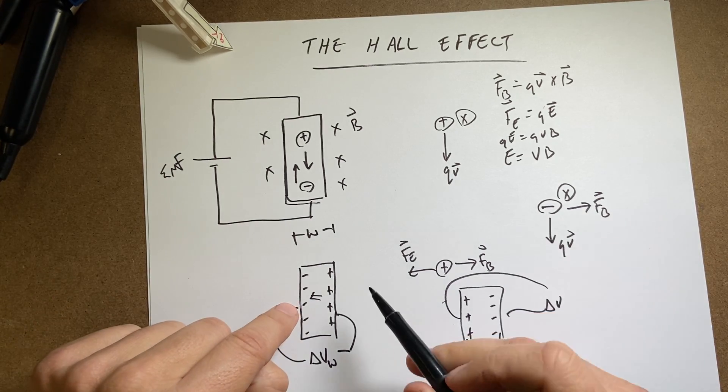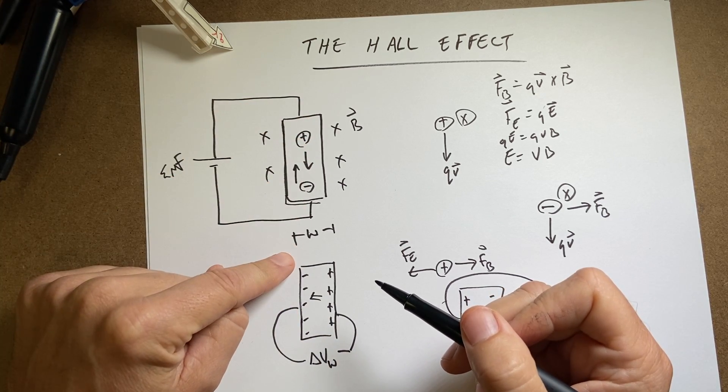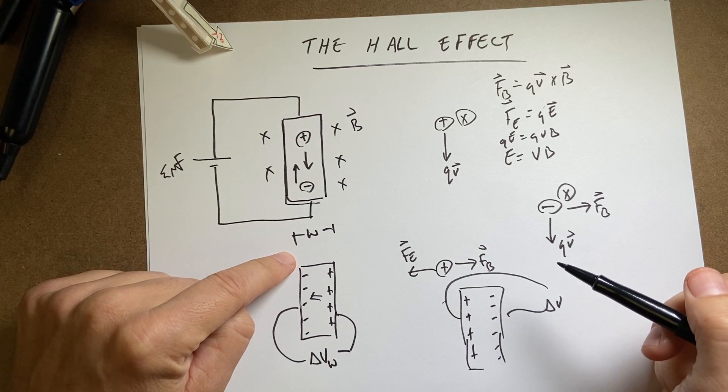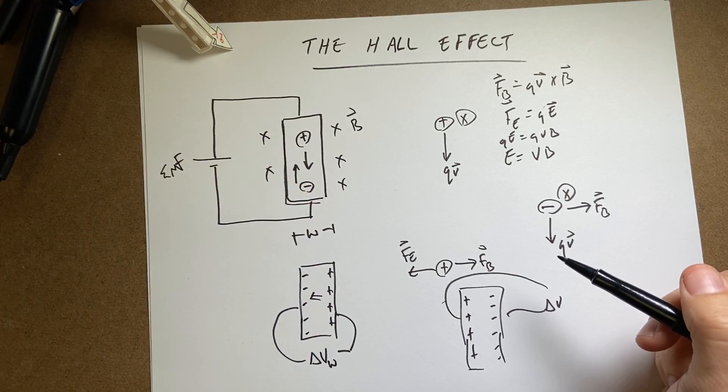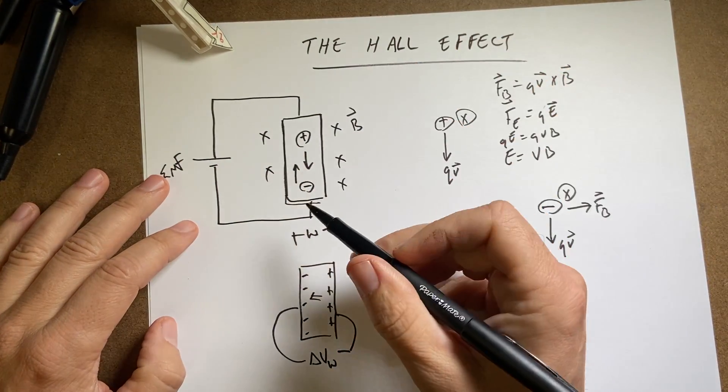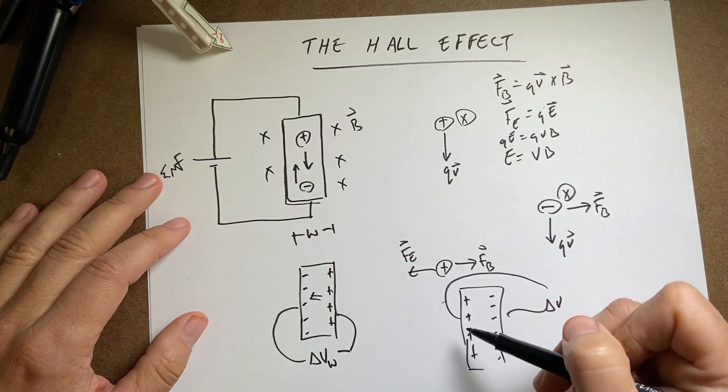So by measuring the this perpendicular voltage through this, I can determine whether the mobile charge carriers are positive or negative. In most cases, we see that moving charges doesn't matter if you have positive charges moving down or negative charges moving up. But in this case, it does.